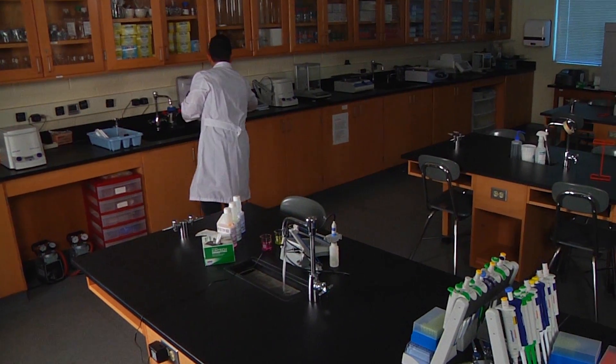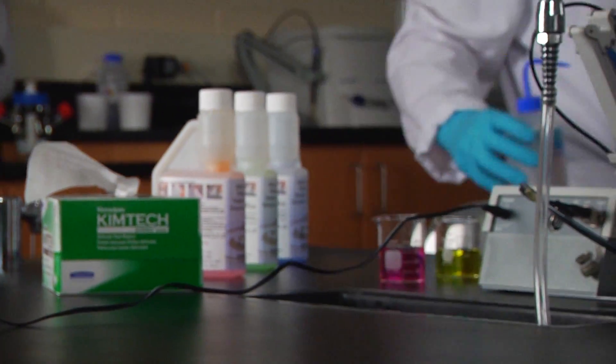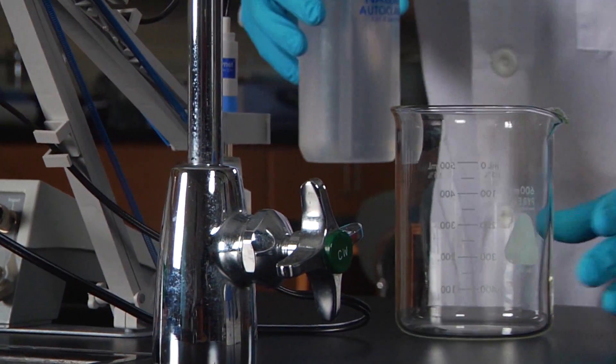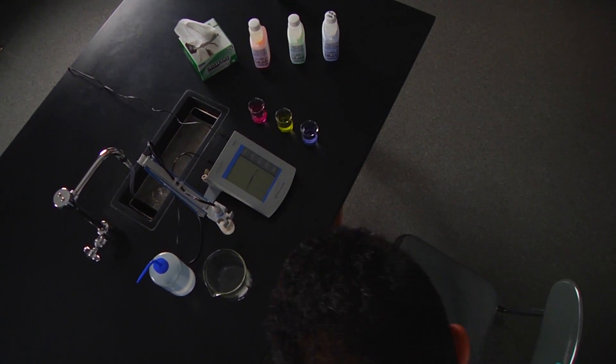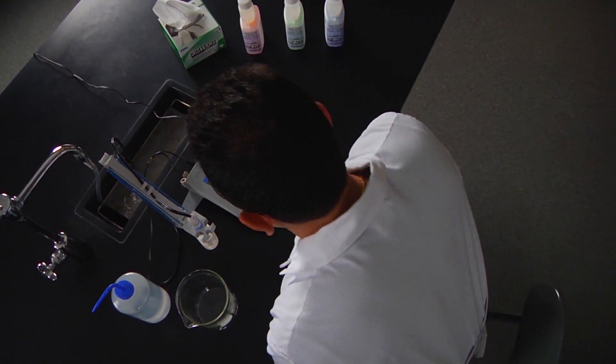The pH meter is an important lab instrument used for measuring the acidity or alkalinity of a liquid. It must be calibrated before each use to ensure accurate readings. Let's do a three point calibration.